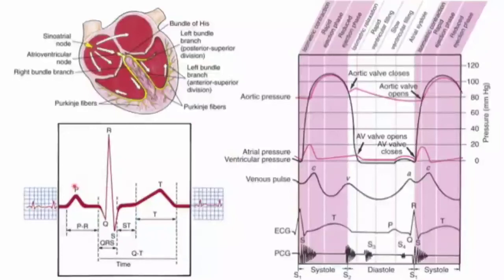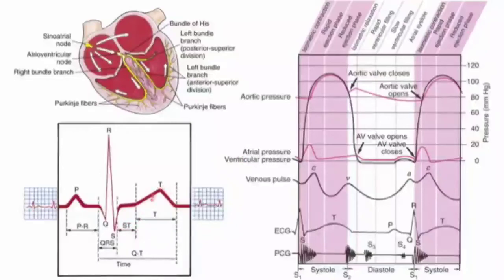The P wave signifies the spread of a stimulus through the atria, also known as atrial depolarization. The PR interval signifies the time from initial stimulation of the atria to initial stimulation of the ventricles, and is usually 0.12 to 0.20 seconds. The QRS complex signifies the spread of a stimulus through the ventricles, or ventricular depolarization, which is less than 0.12 seconds.